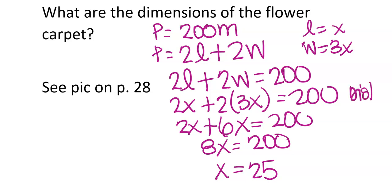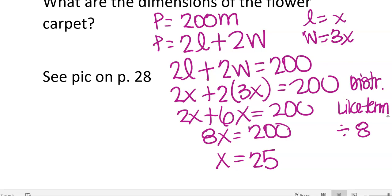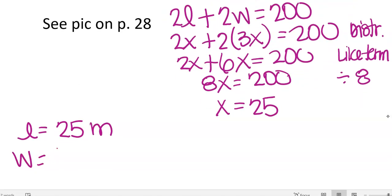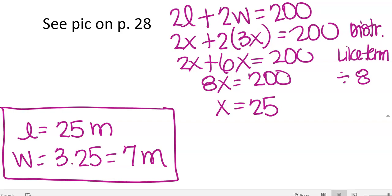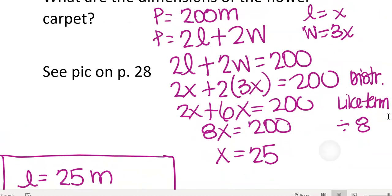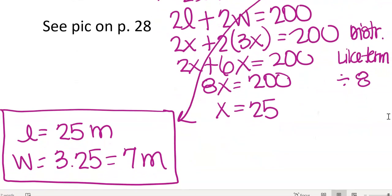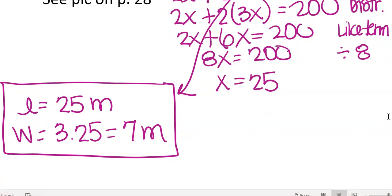So the length is 25 meters and the width is 3 times 25, or 75 meters. Note: in the book they define the length as 3x since it's the longest one. As long as you define your variables properly at the top, you can't really get them wrong. If you didn't define them and had the numbers switched, you'd obviously get them wrong — so make sure you define your variables.